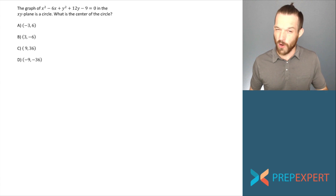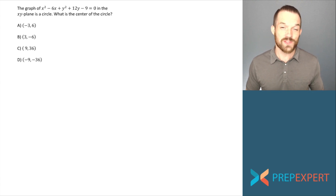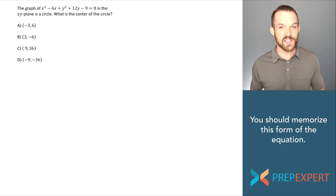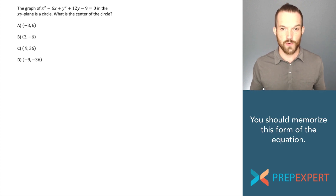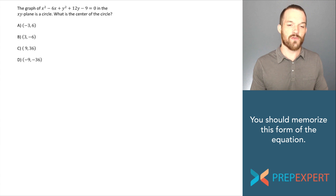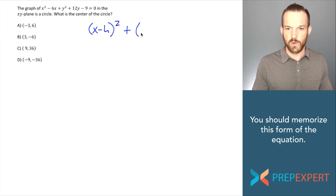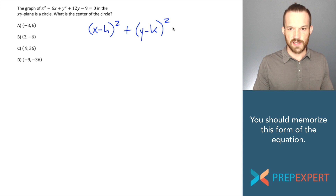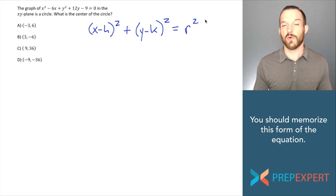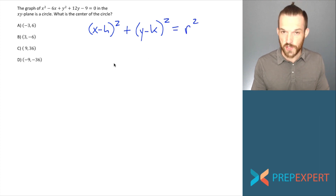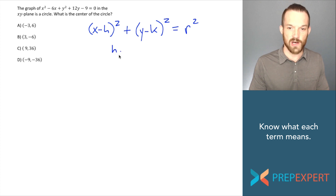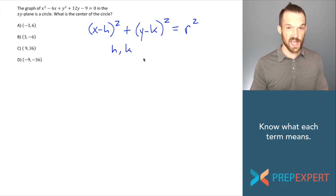Circle equation questions show up a lot on both the SAT and the ACT. The first step to solving a circle equation is being familiar with the standard form of a circle equation. The standard form is: x minus h, quantity squared, plus y minus k, quantity squared, equals r squared. When you have a circle equation in this form, you can just look at it and tell what its center is — the center is (h, k) — and its radius is r.